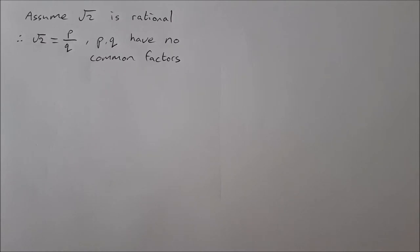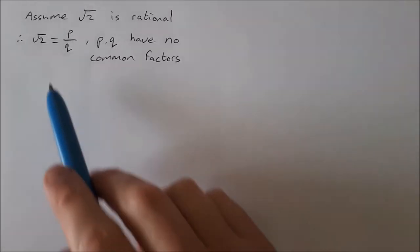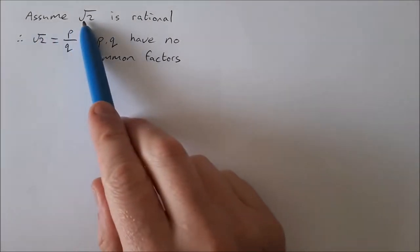Okay, in this video we're going to go through the formal proof that root 2 is irrational. The formal proof for that is by contradiction, so we're going to try and prove that it is rational and we'll end up with some sort of contradiction which you'll see at the end.